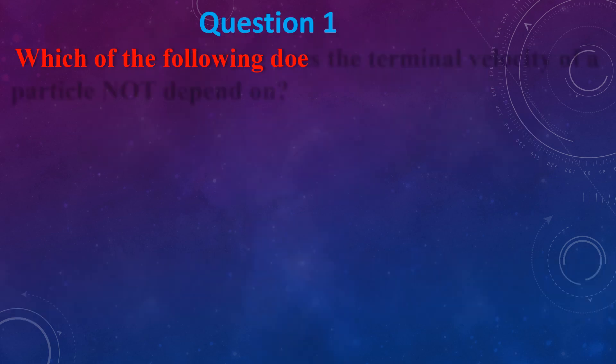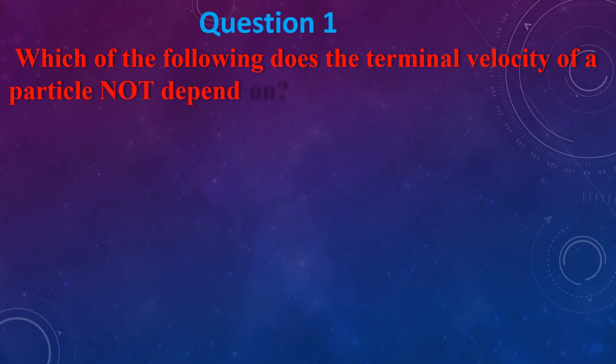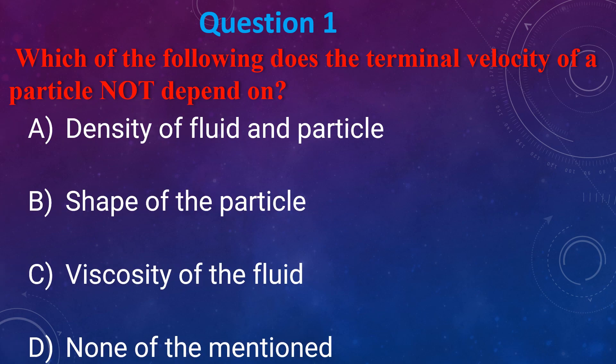Which of the following does the terminal velocity of a particle NOT depend on? (a) Density of liquid and particles, (b) Shape of particle, (c) Viscosity of fluid, (d) None of the above.